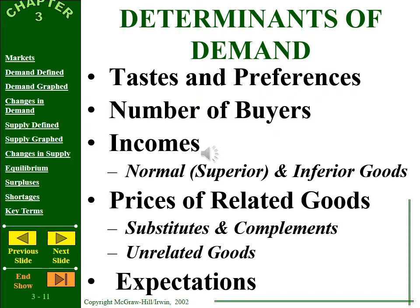Here are the determinants of demand: taste and preferences, number of buyers, incomes (including normal and inferior goods), and prices of related goods — substitutes and complements. Some goods aren't related at all. Expectations also matter: if we expect the price of something to rise in the future, we purchase more of it now; if we expect the price to fall, we purchase less now.